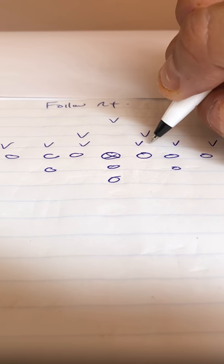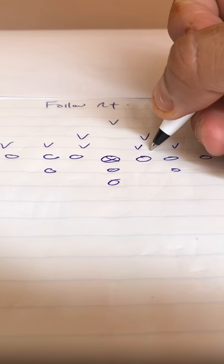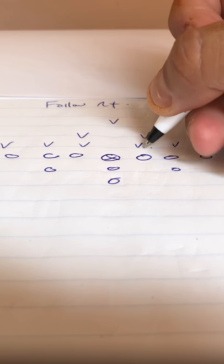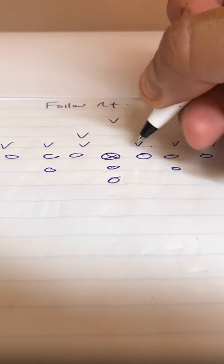The offensive line will double the action key. If there's a three technique, they double the three. If there's no three, if there's a two, they double the two. If there's no three or two, they double the two eye.